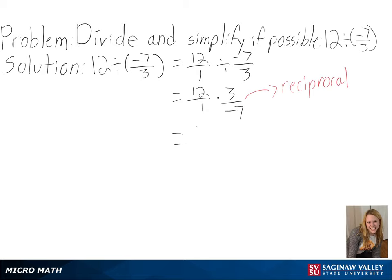Then we can multiply this out: 12 by 3 and 1 by negative 7. And since we can see that 7 is not able to be divided any further, we have 36 over negative 7 as our final answer.